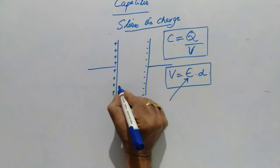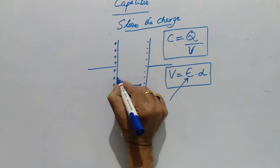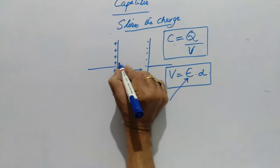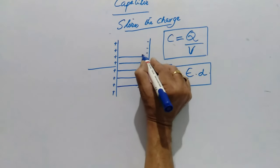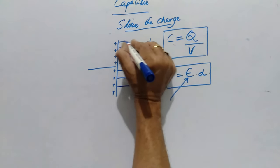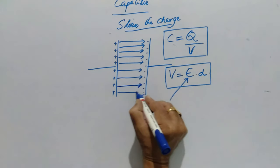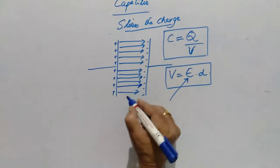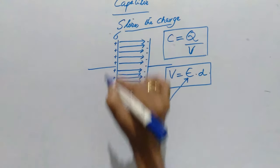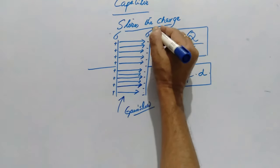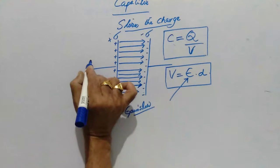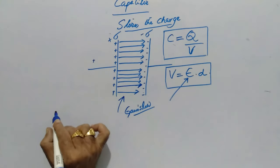In between two plates, a uniform electric field exists, provided the plates are very large. Otherwise at the ends it may not be uniform. By using Gauss's law, we have already calculated that if the charge density of one plate is +sigma and the other is -sigma, we can find the electric field.